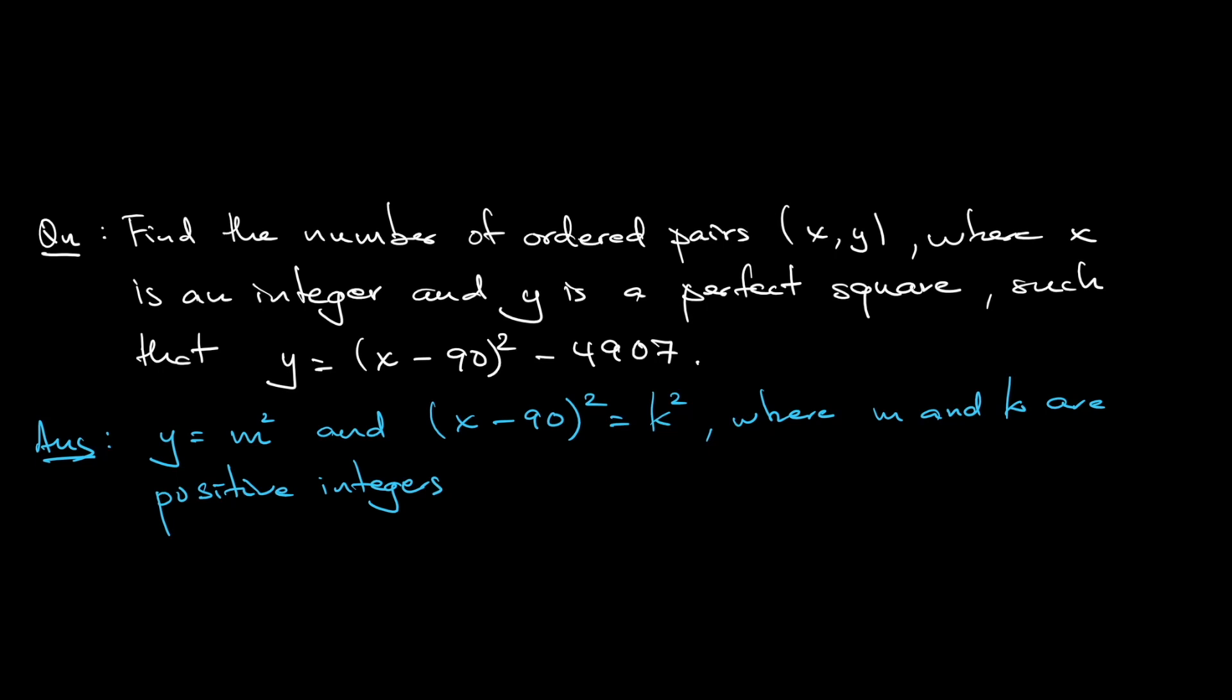So substitute into the equation: m square is equal to k square minus 4907. So k square minus m square, put m square to the right hand side, put negative 4907 on the left hand side. But then I write left as right, right as left.